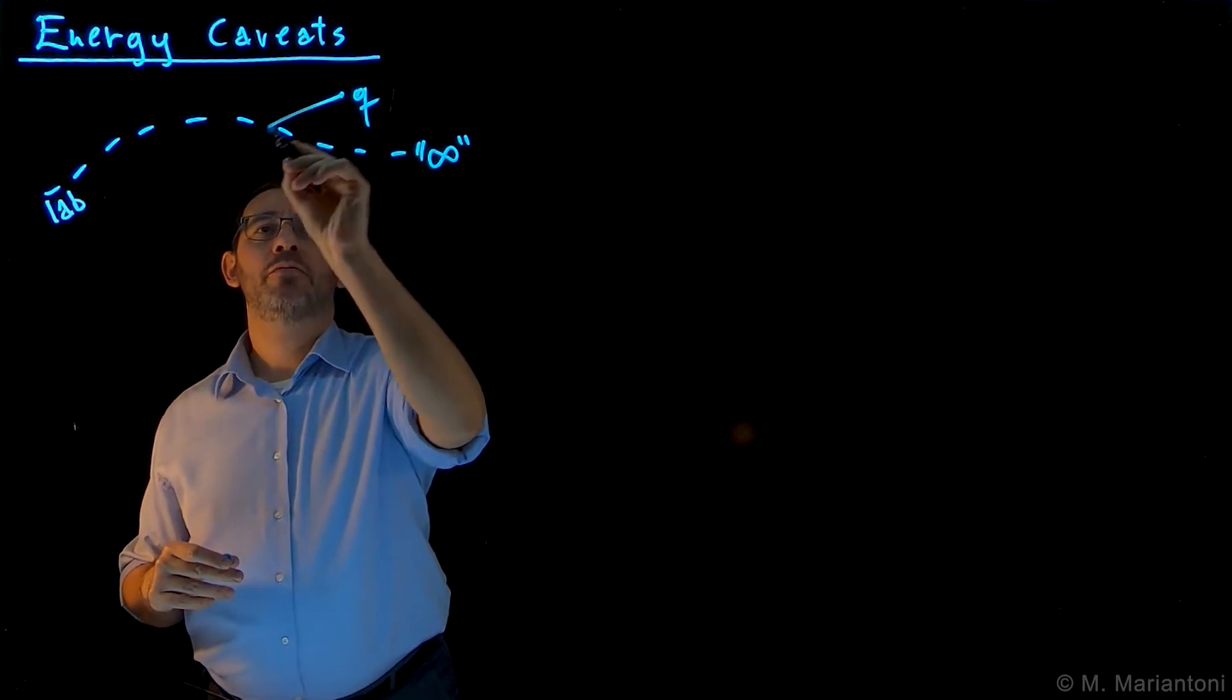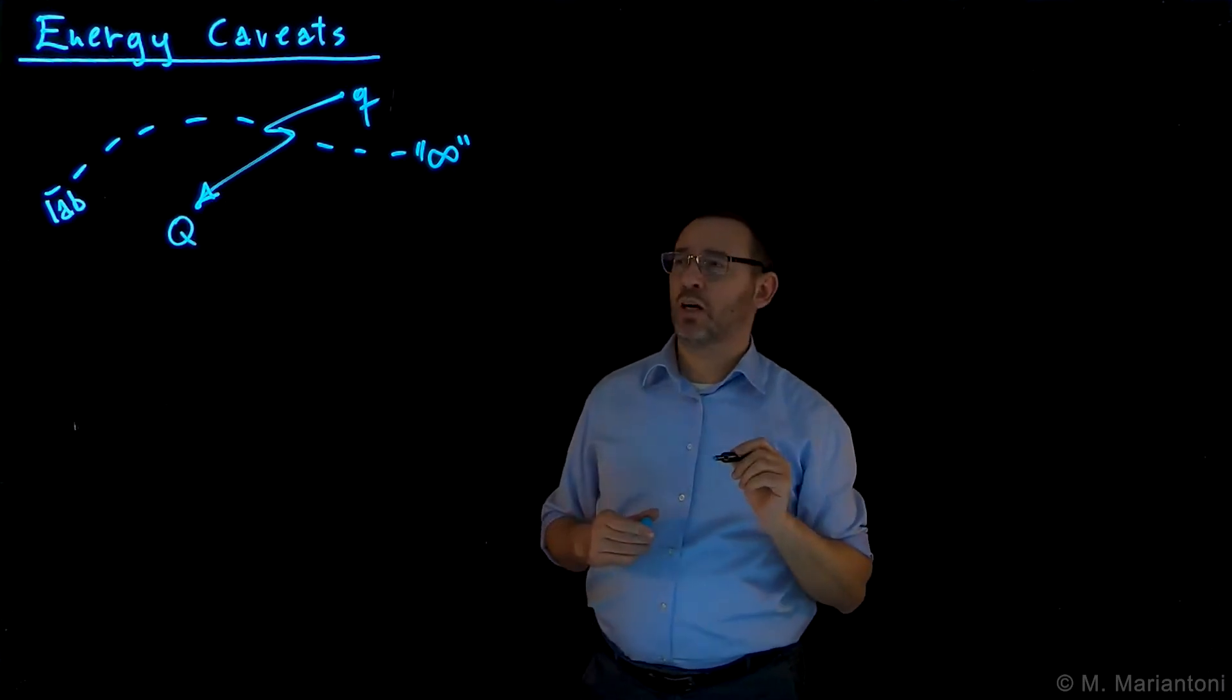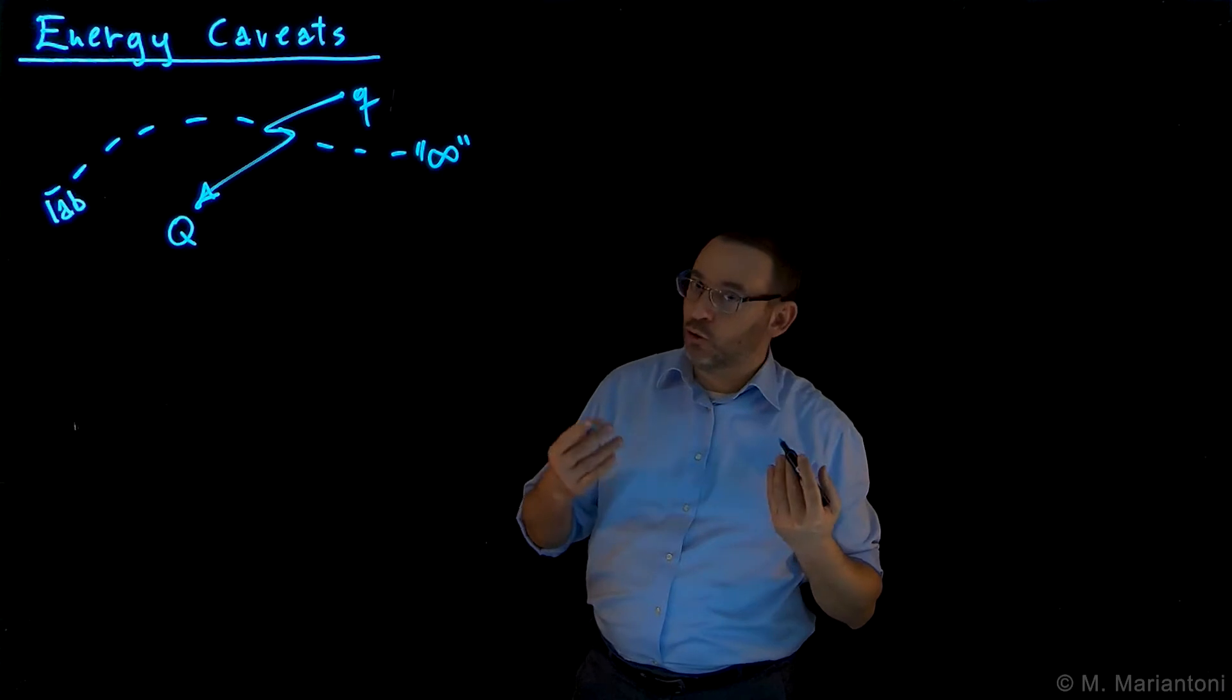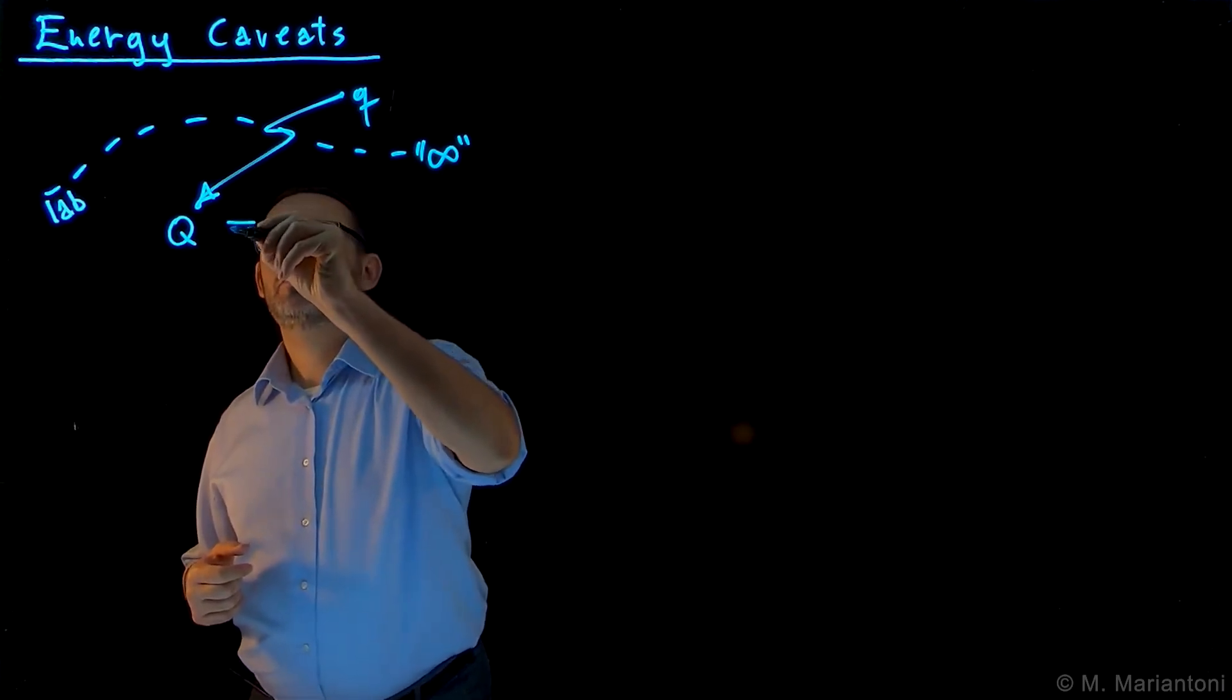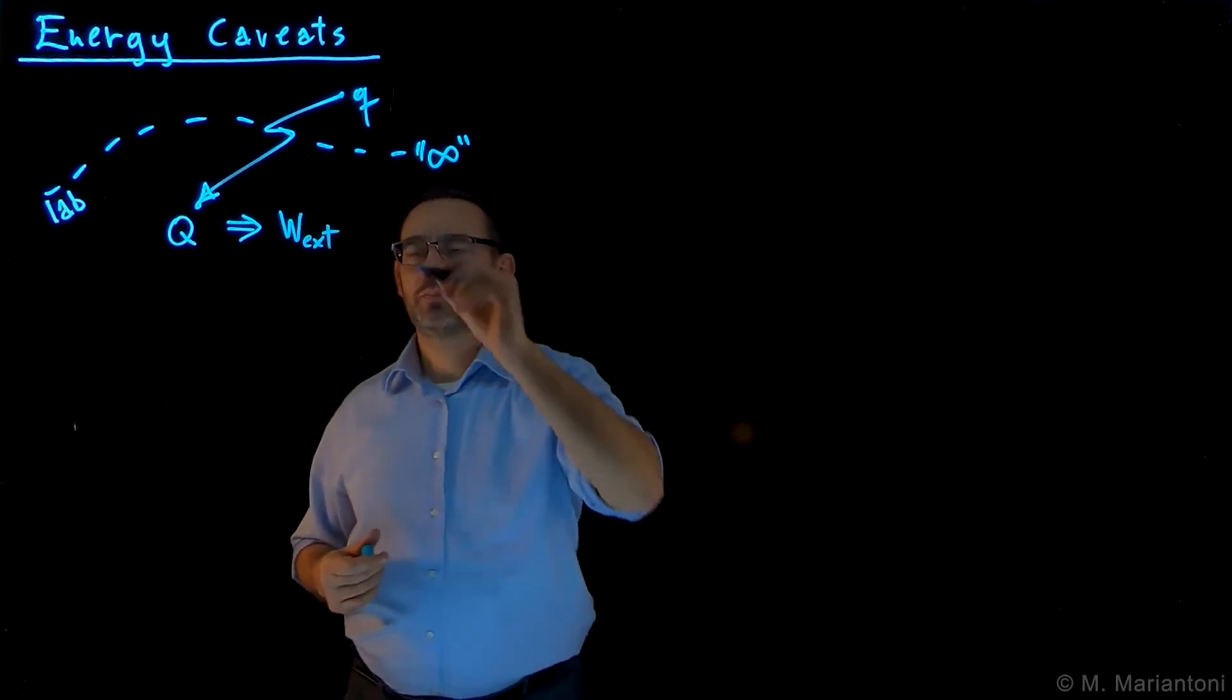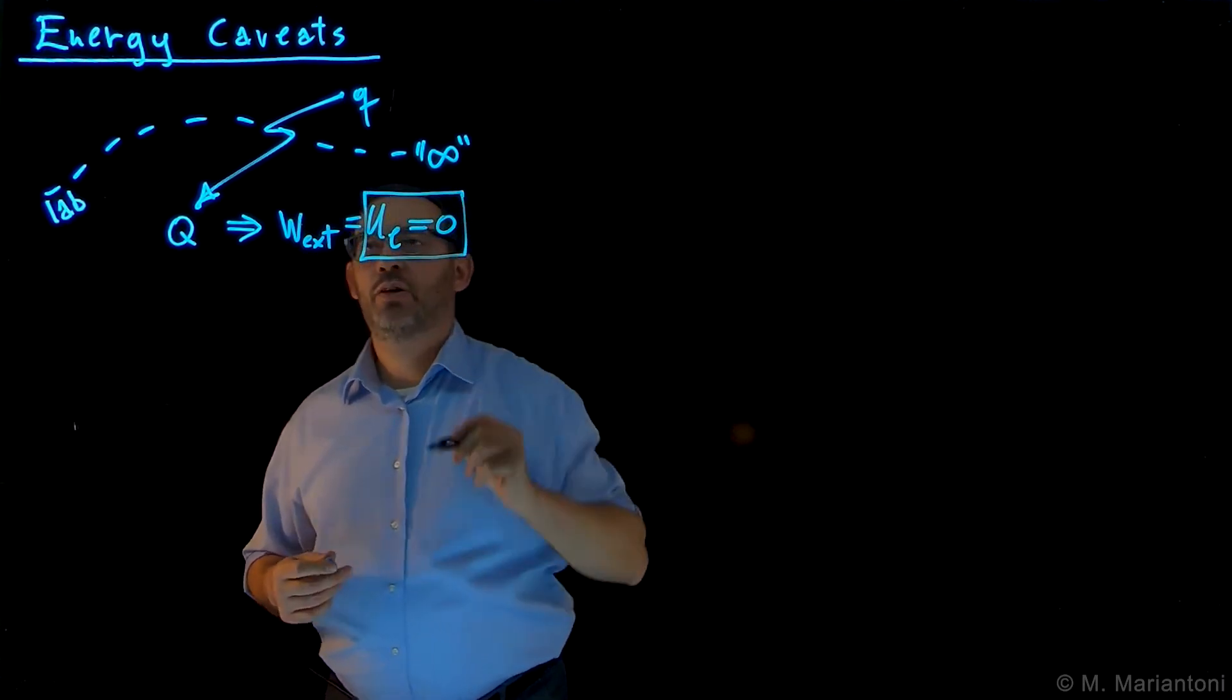If I bring along any path this particle to a point capital Q within this region of space, what is the work we need to perform against the field forces? What is the external work, which is also called electrostatic energy, required to perform this movement? In this case, there is no other particle generating the field. The work of the external forces, which equals Ue, is exactly equal to zero, as we have seen already in a previous video.